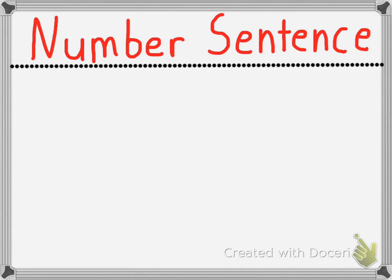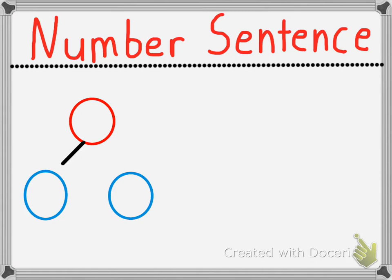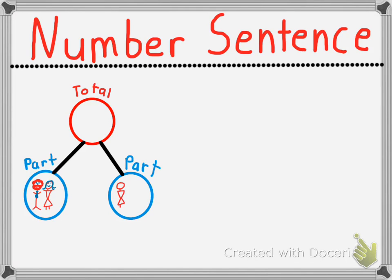Now let's go ahead and take a look at this as it would be in a number sentence. Remember, we have our number bond, which is made up of two parts that make a whole or a total. We have two adults and three children, which makes a total of five family members. That's our number bond, and now we're going to take this into a number sentence.